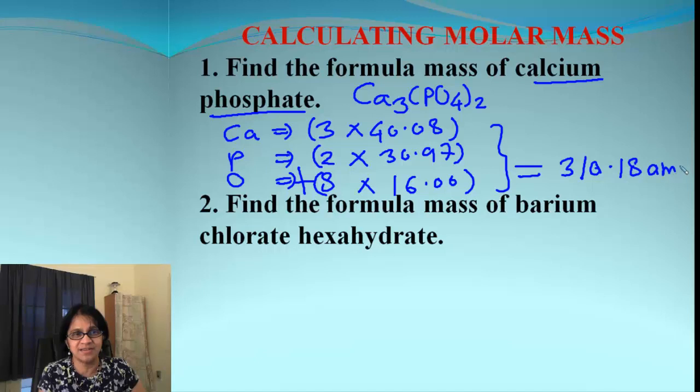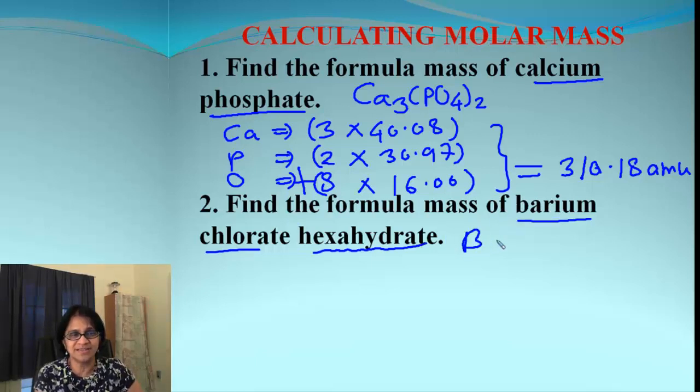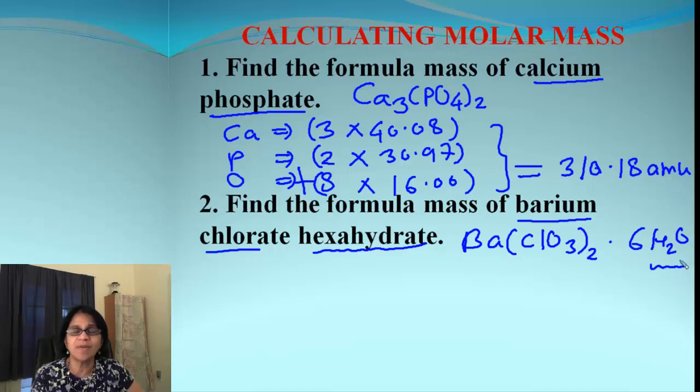So that was easy, right? Let's do one more. This is formula mass for barium chlorate hexahydrate. Now I am going to keep this separately and I'll tell you why in a minute. So the formula is Ba(ClO3)2 and then 6H2O. When you are finding the molar mass of a hydrate, it's easier to consider the molar mass of water separate than the molar mass of the compound.